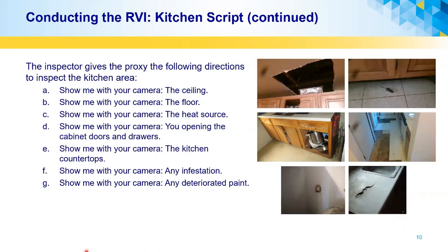The inspector gives the proxy the following directions to inspect the kitchen area, continued: show me with your camera the ceiling; show me with your camera the floor; show me with your camera the heat source; show me with your camera you operating the cabinet doors and drawers; show me with your camera the kitchen countertops; show me with your camera any infestation; and show me with your camera any deterioration.